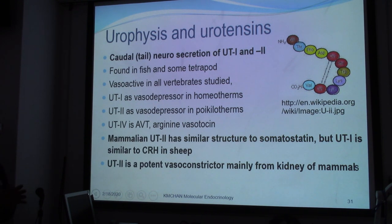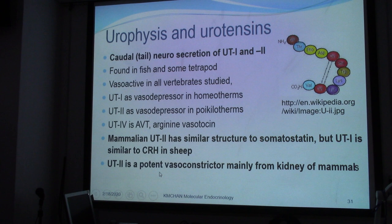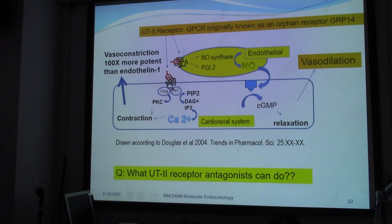What we are trying to show is the different tocins found in different parts of the body. We need to study them more, but unfortunately, recent study of these hormones is mainly related to the control of blood pressure, because UT2 or urotensin 2 is a potent vasoconstrictor. Scientists are looking at urotensin to see whether it can change blood pressure. Its action involves a 7-transmembrane domain G-protein-coupled receptor, and its potency is about 100 times more than endothelin.